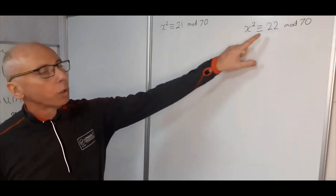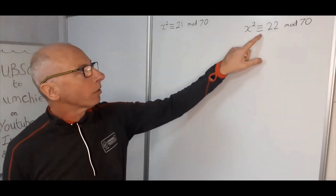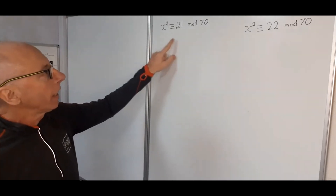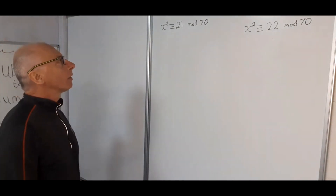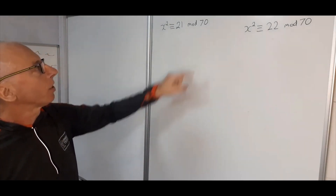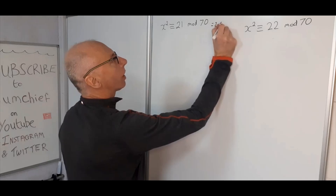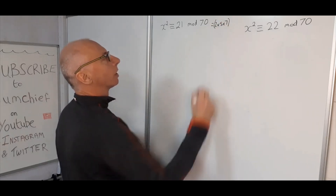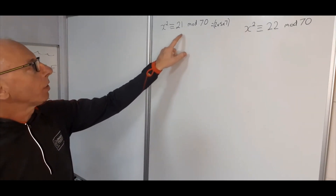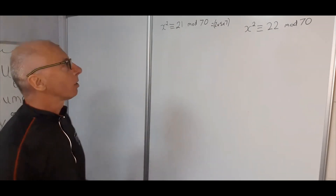We're going to try and solve these two quadratic congruences: x squared congruent with 21 mod 70, and x squared congruent with 22 mod 70. Modulus 70 is a composite modulus — 70 equals 2 times 5 times 7. So we can split each question up into three forms, one for each prime factor of 70.